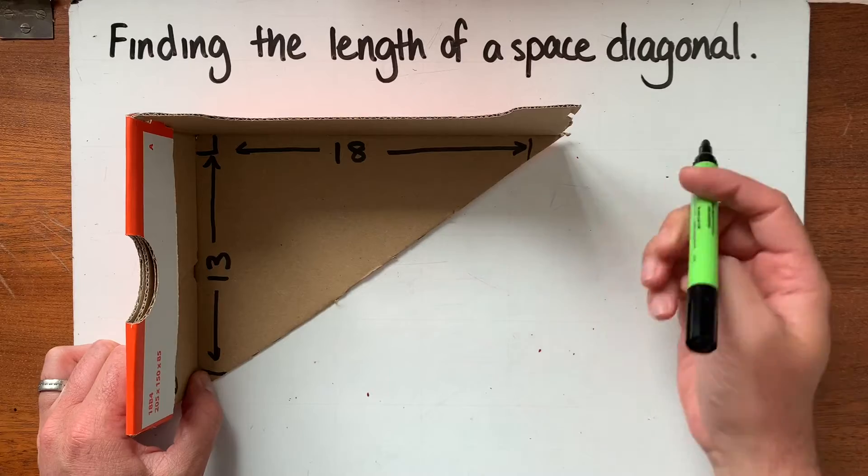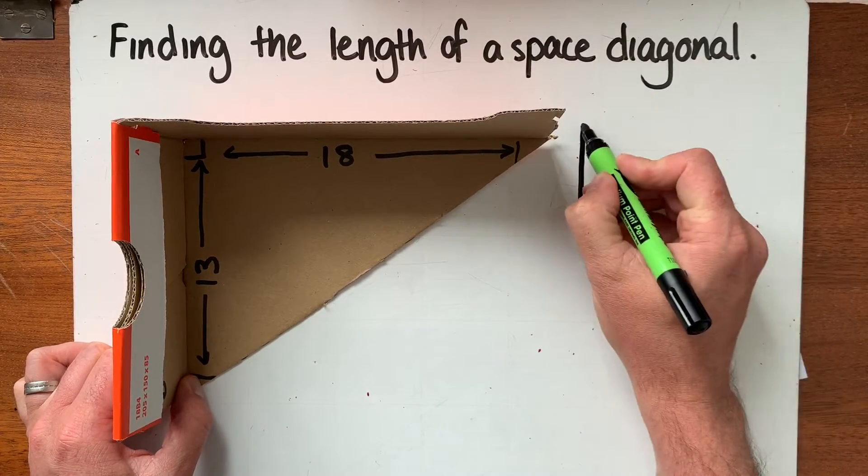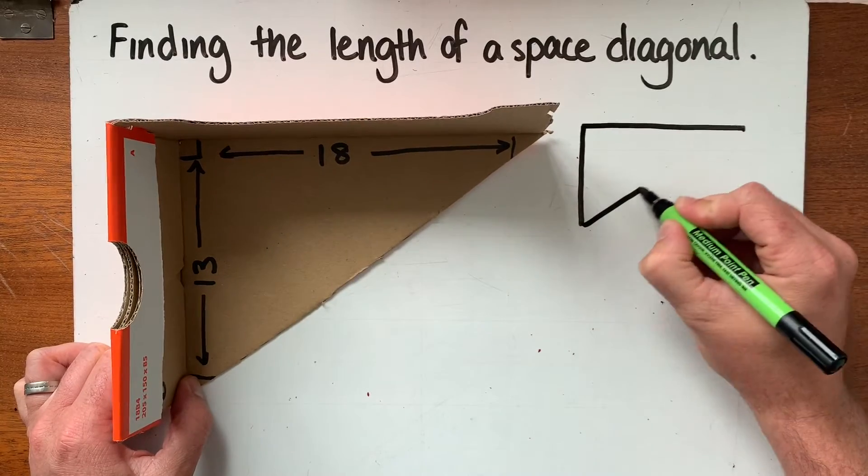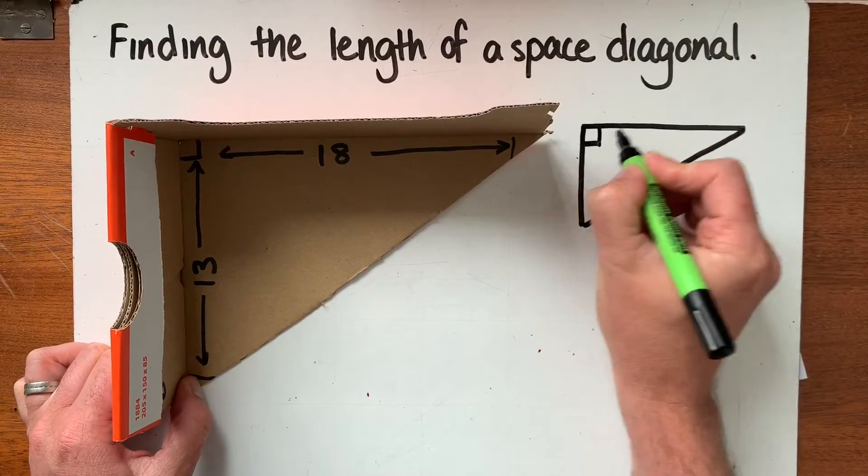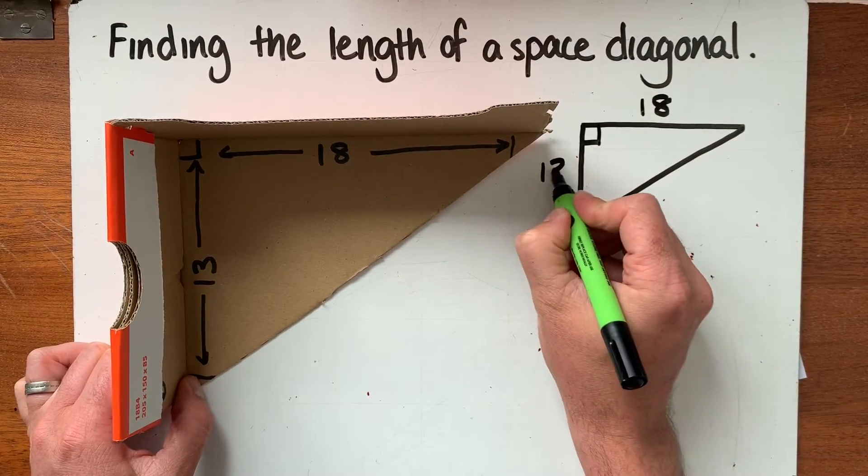I'm going to draw that little diagram out here so you can see what I'm talking about. So we've got the base of our box so only focusing on the base and we've got a side of 18 and another side of 13.